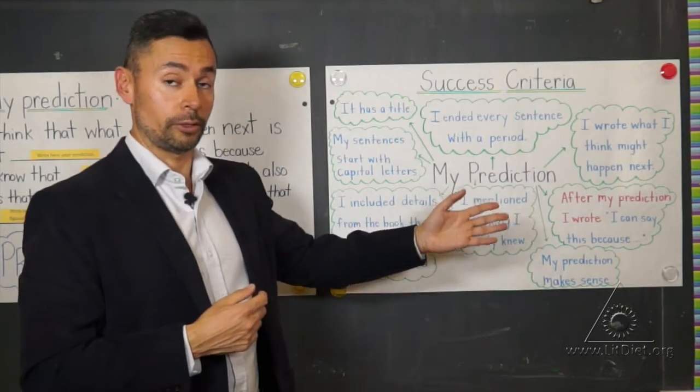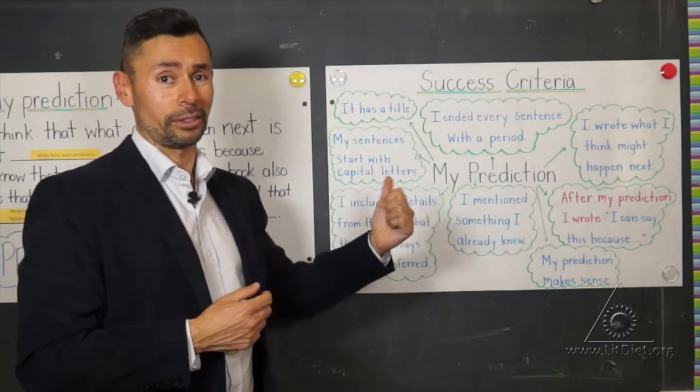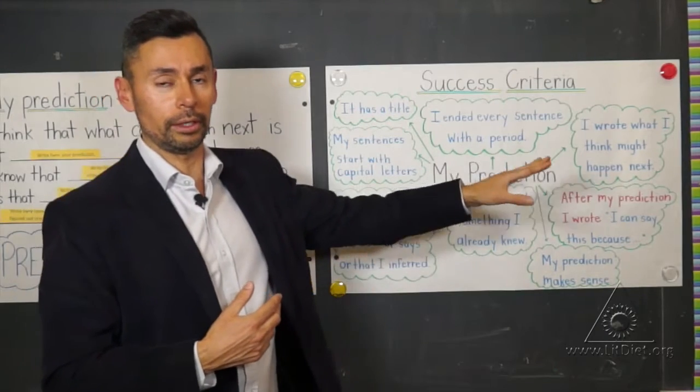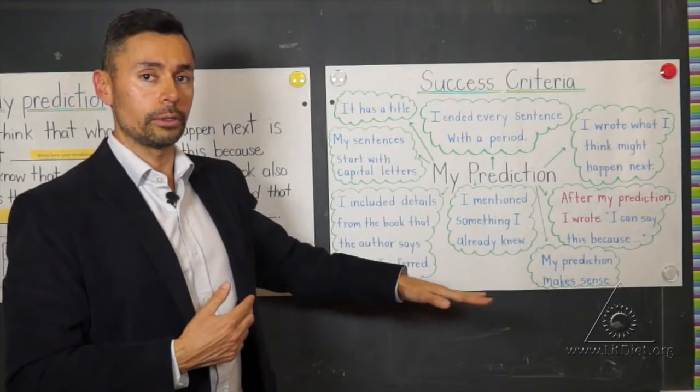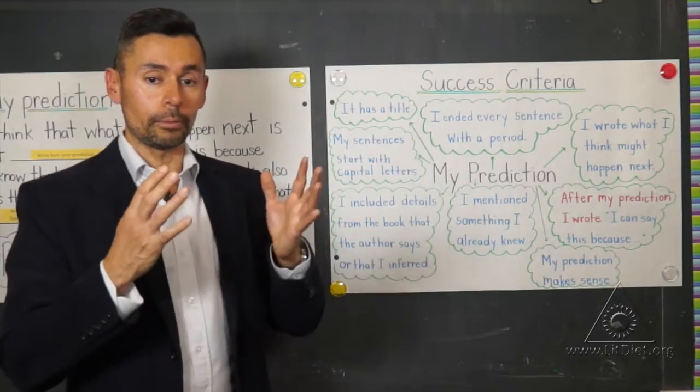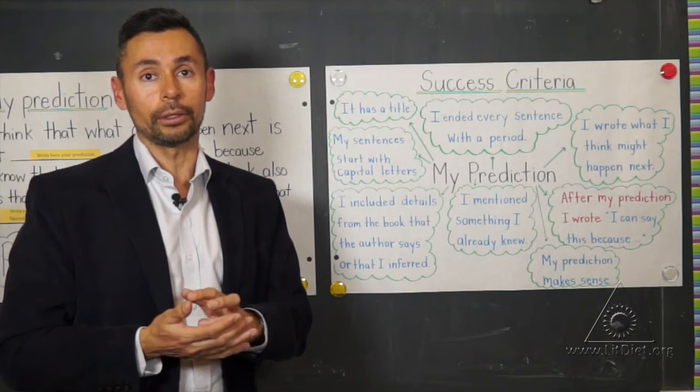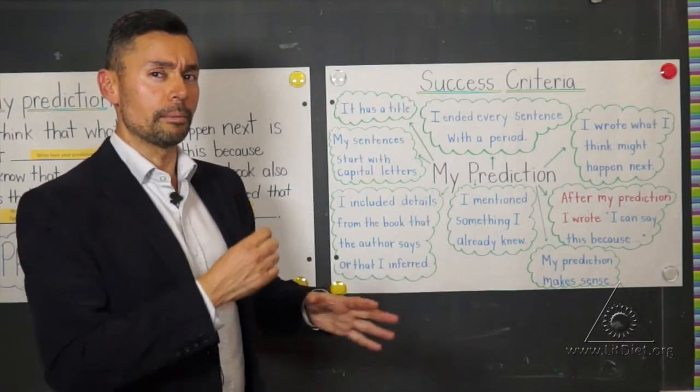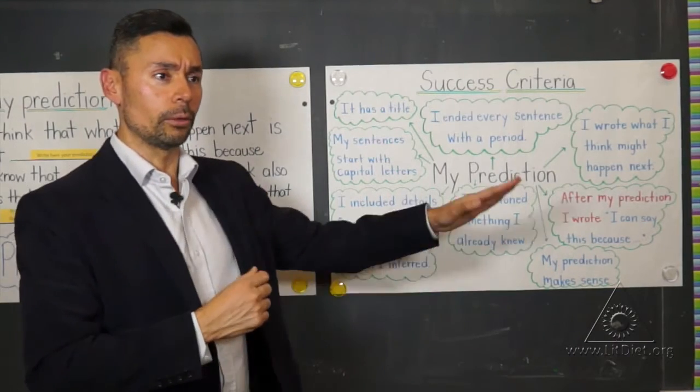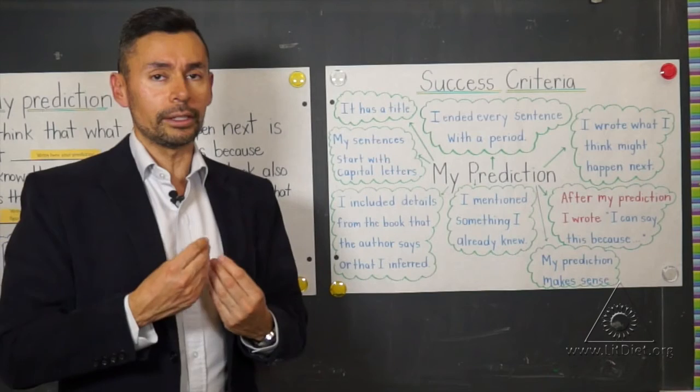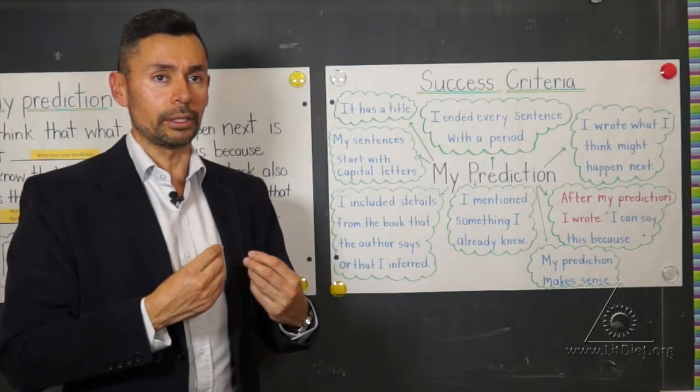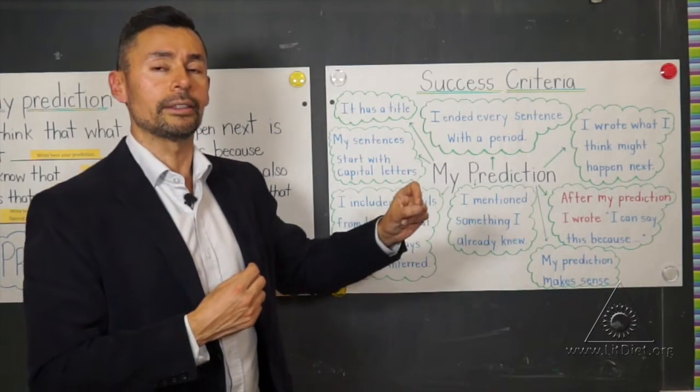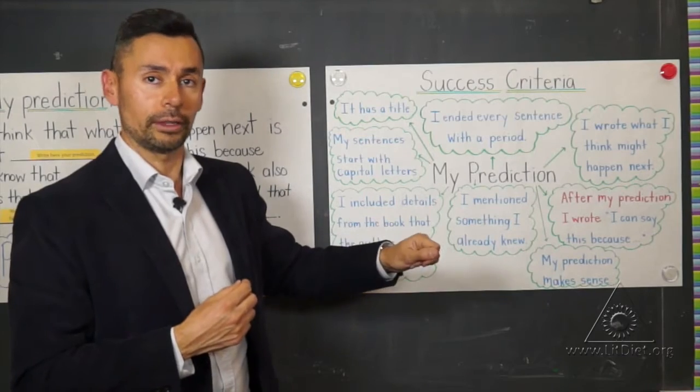So here's an example of a success criteria that I use with predictions in this case. We went over all the things that we consider together that their writing piece should have in order to be considered successful. Before coming to see me, they come here and make sure that they actually hit all those points, so they don't need the teacher as much at that point because they already know, yeah, I did this, I did this, oh, I forgot this. Of course, this is a process that at first many students need support to do.